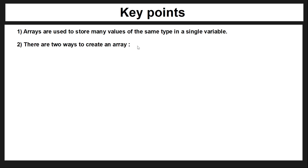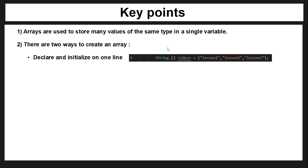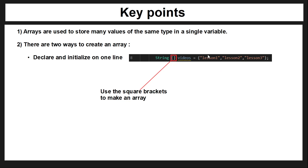There are two ways to create an array. The first is to declare and initialize it on one line. We specify the data type — so each value stored in this array is going to be a string — then we use square brackets to tell the computer it's going to be an array, then give it a name, and the curly brackets are where we insert the values. This creates the array in memory and initializes the values within it, so this first array will have three values.